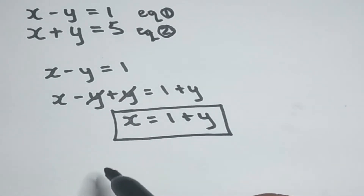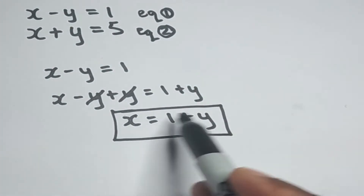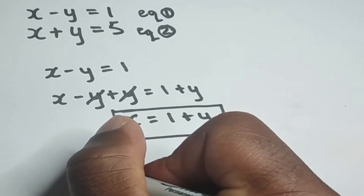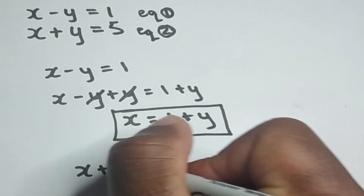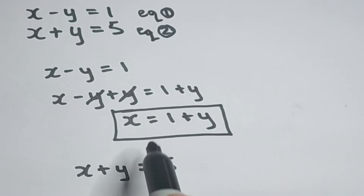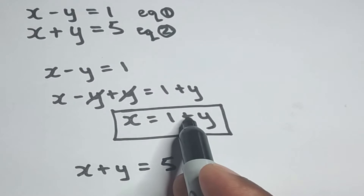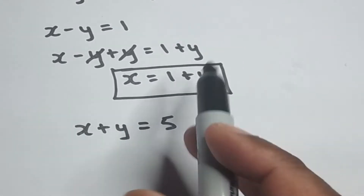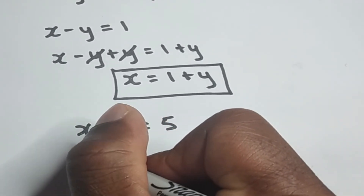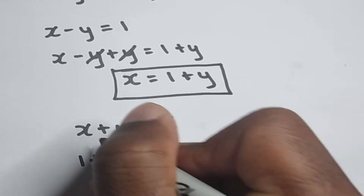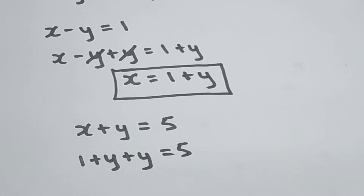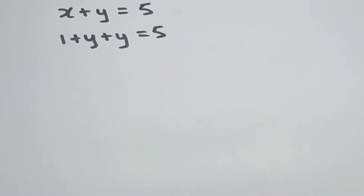Now the next thing we're going to do is substitute what we got for x, which is one plus y, into equation two. Equation two is x plus y is equal to five. I'm going to replace x with one plus y, so wherever I have x I replace it with one plus y, giving us one plus y plus y is equal to five.